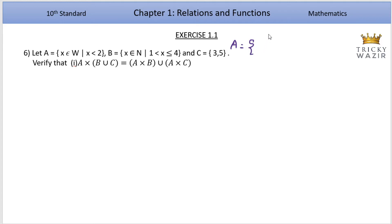So A equals 0,1 since x belongs to whole numbers and 1 less than x less than equal 4, B equals 2,3,4. C equals 3,5. Now let's look at LHS.